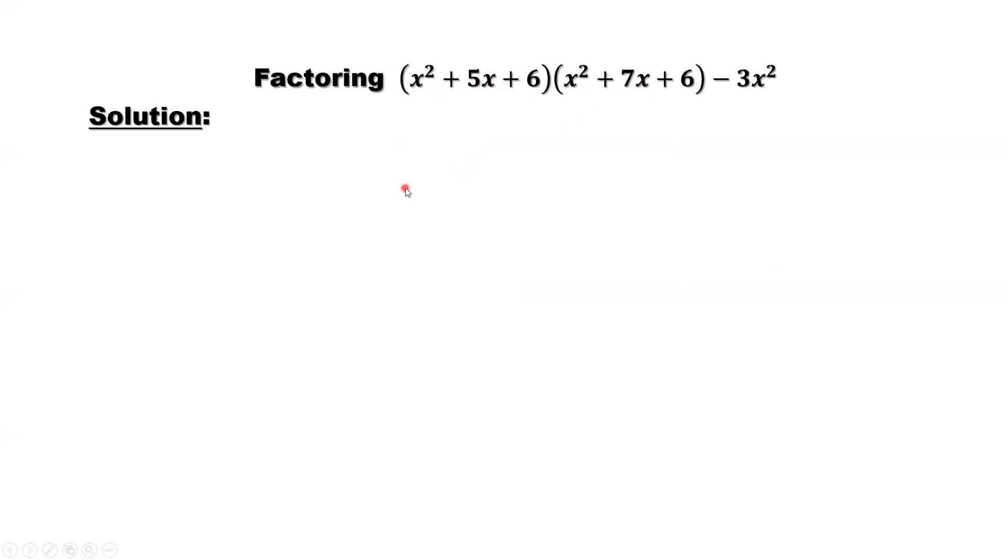We define a new variable based on the average. So here only difference of 5x, 7x. The average is 6x. So this is 6x. We define y equals x squared plus 6x plus 6.